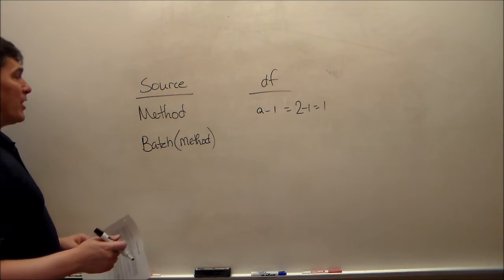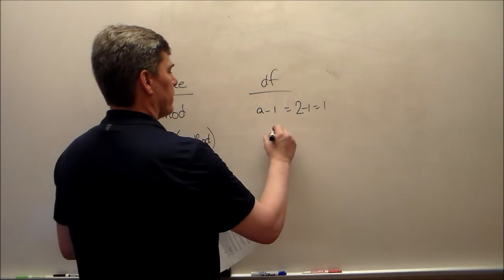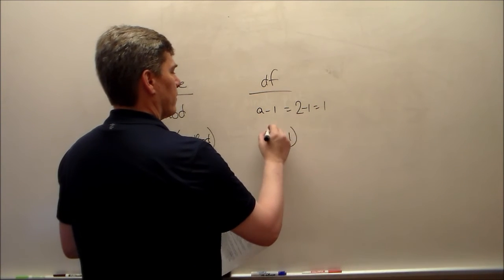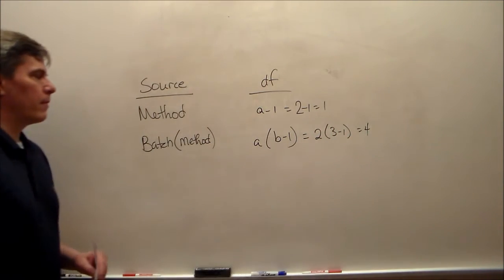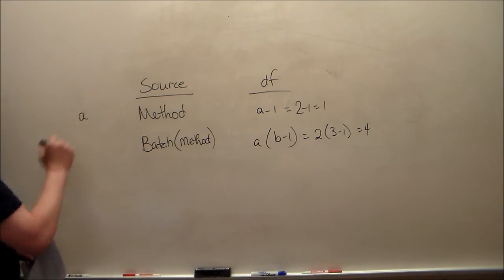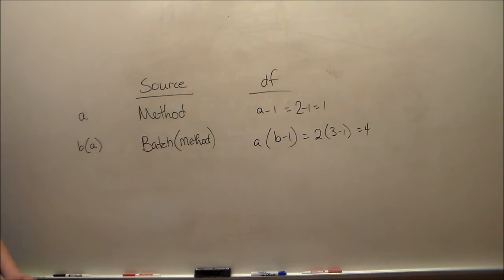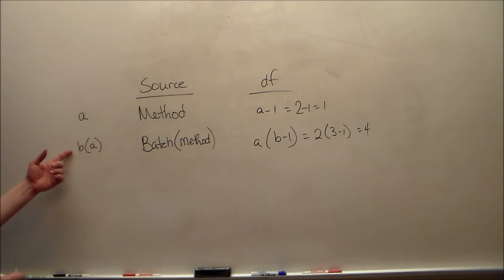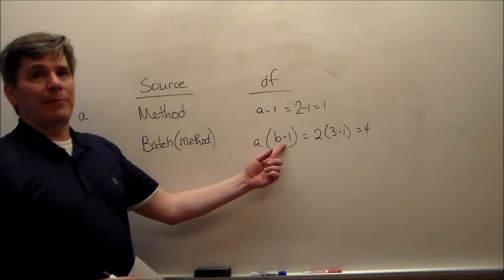How many batches were there? Three. I'm going to write this as B as a function of A. A is fixed; B is random, by the way, because we're not comparing different levels of batches — we're just comparing different levels of method. So it's B of A, with A on the outside and B minus one.